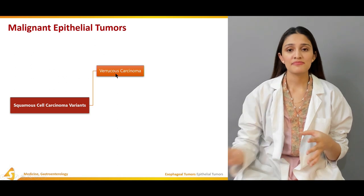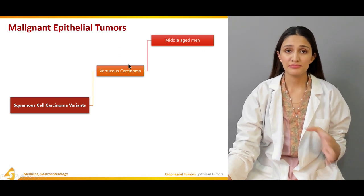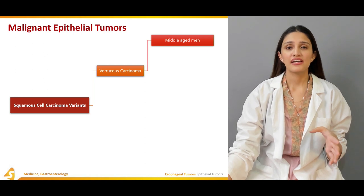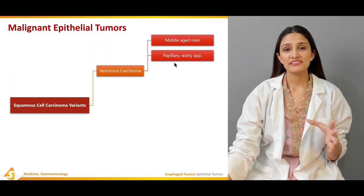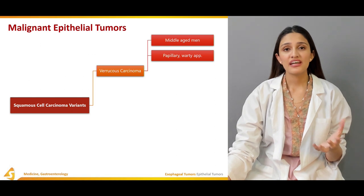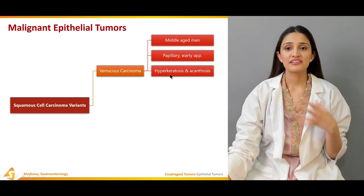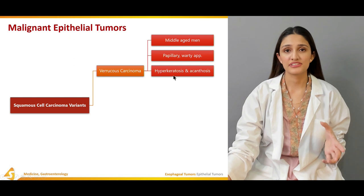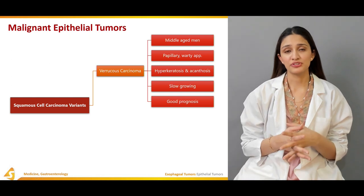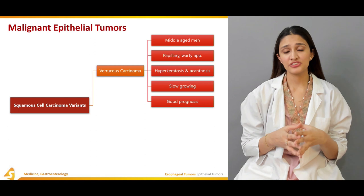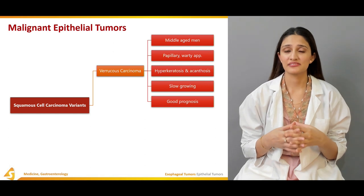The first variant is verrucous carcinoma. It is usually present in middle-aged patients around 40 to 50 years, and it is more common in males. Endoscopically, it has a very papillary and warty appearance. Histologically, you would see hyperkeratosis and acanthosis. It is a very slow-growing tumor with a very good prognosis, though it is very rare with around 30 reported cases.